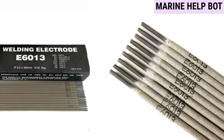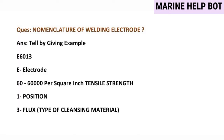Nomenclature of welding electrode is an important topic. Surveyors may ask what E6013 means or which electrode you are using on the ship. Take the example E6013: 'E' stands for electrode, '60' is the tensile strength, '1' is the position, and '3' is the flux type or coating material used for the welding electrode. This answer was accepted by a surveyor when asked to my friend.